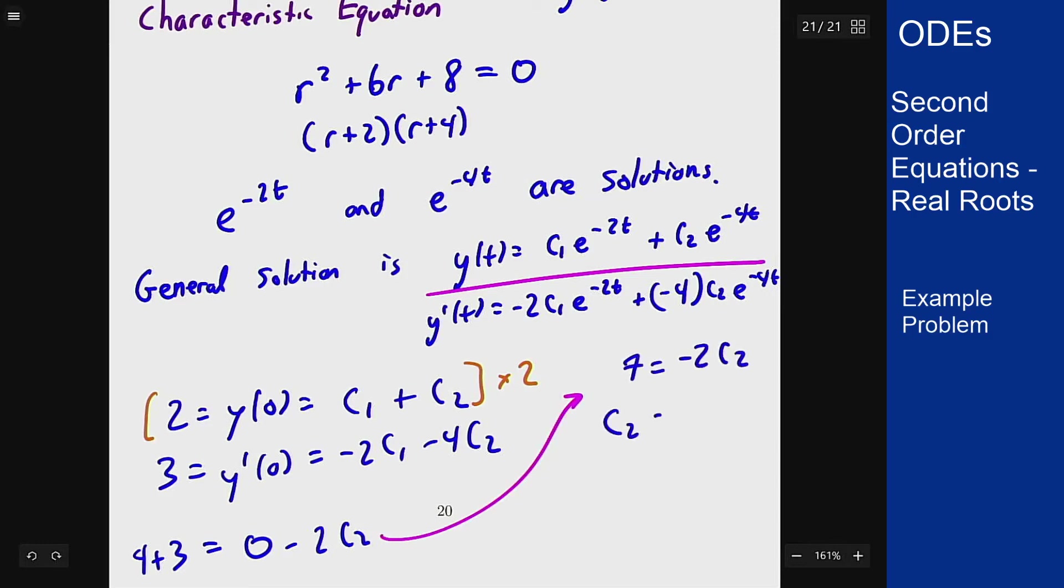Knowing then that 2 equals c1 plus c2 means that c1 is 2 minus c2, which is 2 minus negative 7 halves, which is 11 halves.